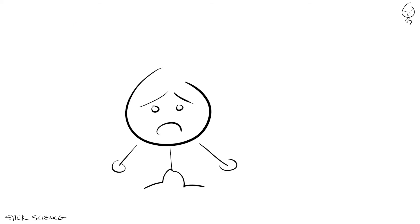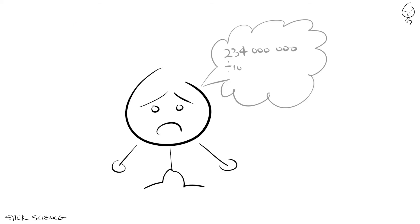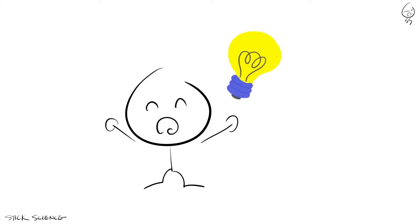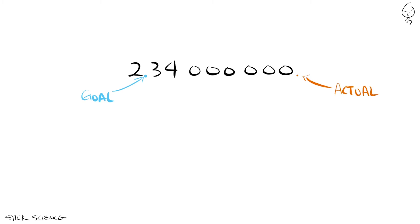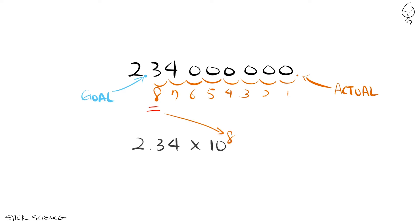But you obviously don't want to go through this process every time. Fortunately, there's a shortcut. Just start by visualizing where you want the decimal to end up. With scientific notation, that'll be right after the first digit. Then count the number of places you need to move the actual decimal point: 1, 2, 3, 4, 5, 6, 7, 8. And that's the number you want as your exponent. We write it, and voilà, you have your conversion.